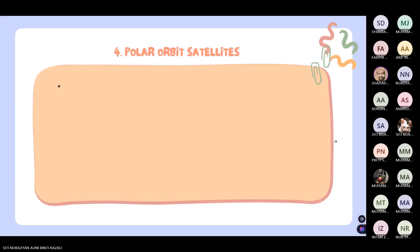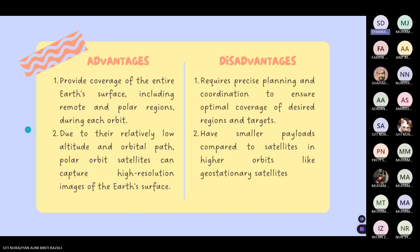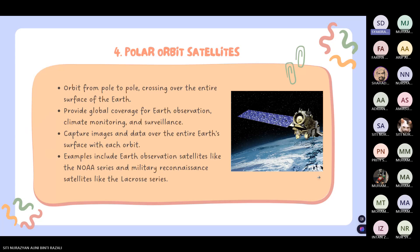Next are polar orbit satellites, which orbit from pole to pole, crossing over the entire surface of the Earth. They provide global coverage for Earth observation, climate monitoring, and surveillance. They capture images and data over the entire Earth's surface during each orbit. Examples include Earth observation satellites like the NOAA series and military reconnaissance satellites like the Lacrosse series. Polar orbiting satellites provide high-resolution data, revisit areas frequently, and offer global coverage, making them essential tools for various scientific and commercial applications.